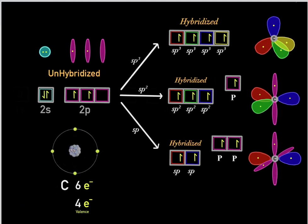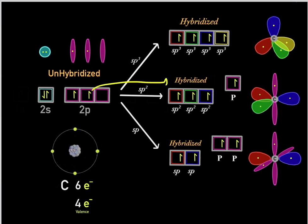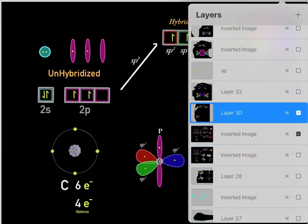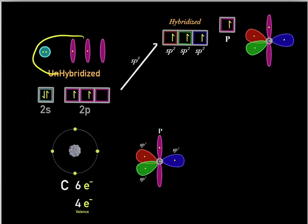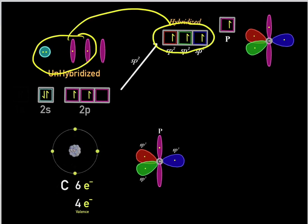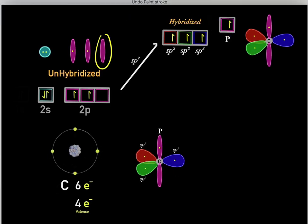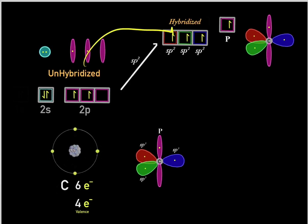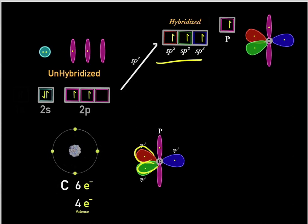So far we've gone through examples with sp3 hybridized atoms. When we form an sp2 hybridized atom, we take one s orbital and two p orbitals and hybridize them to form three sp2 hybridized orbitals. Therefore, one p orbital is left unhybridized and remains unchanged. An sp2 hybridized atom has three sp2 hybridized orbitals and one p orbital.